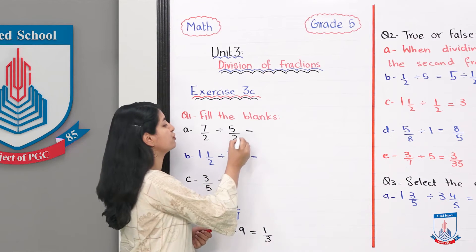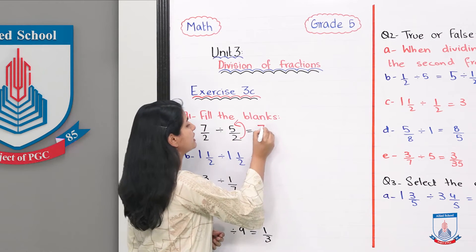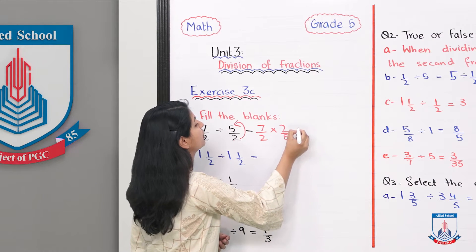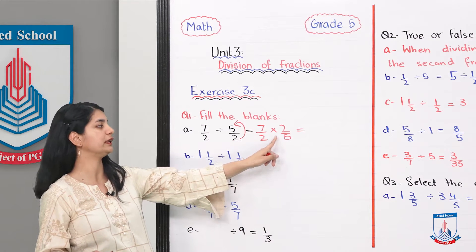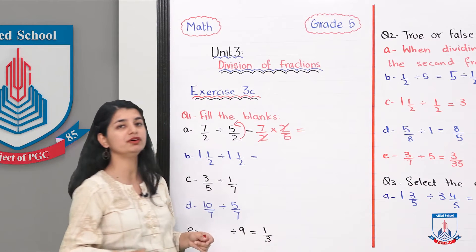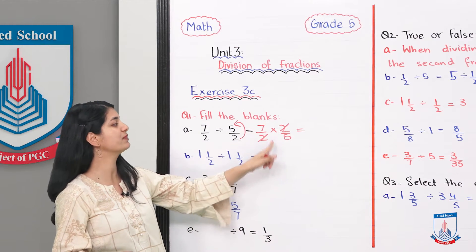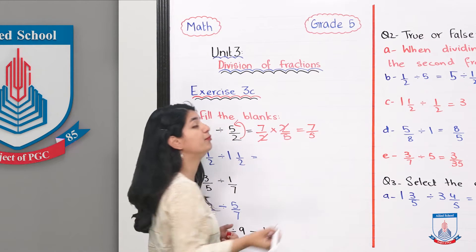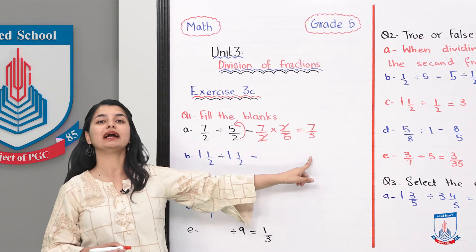We invert the fraction, so this 5 over 2 will become 7 over 2 multiplied by 2 by 5. Before solving, we can simply cancel these two 2's out because they can divide from each other. We get 7 over 5. This is an improper fraction we want to make proper, what do we do?